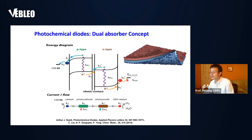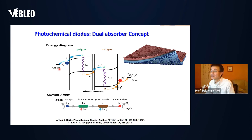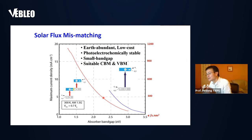Back in the 70s, much of this effort on photochemical diodes was driven toward solar-driven water splitting to produce hydrogen—not so much on CO2 reduction. When we started the Helios program, the ultimate goal was to do CO2 reduction in the final device. Now let's take a look at why nanowires can play a significant role as photocathode and photoanode.